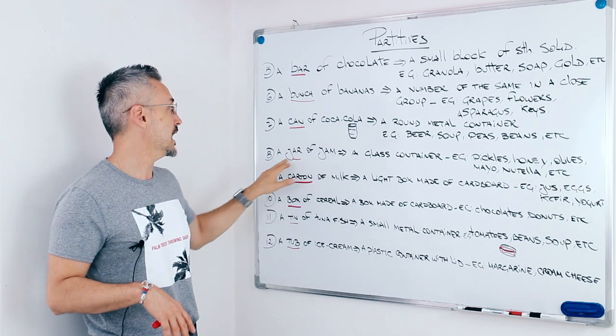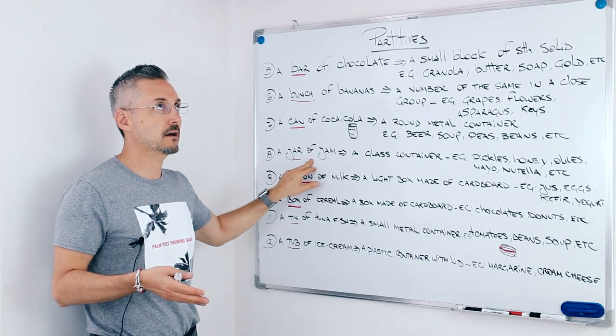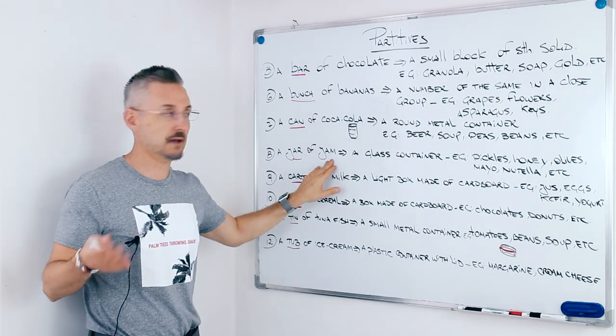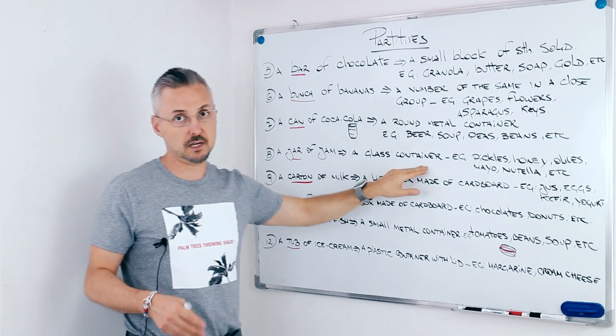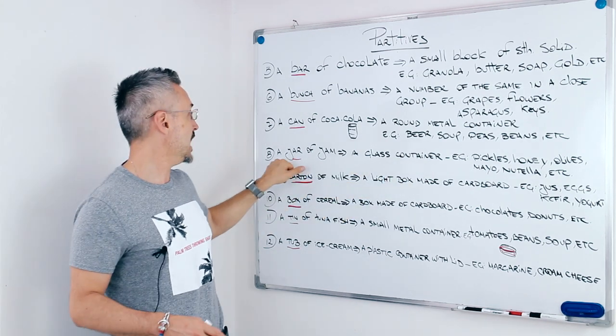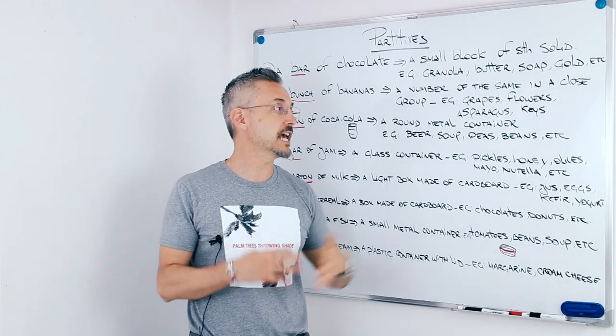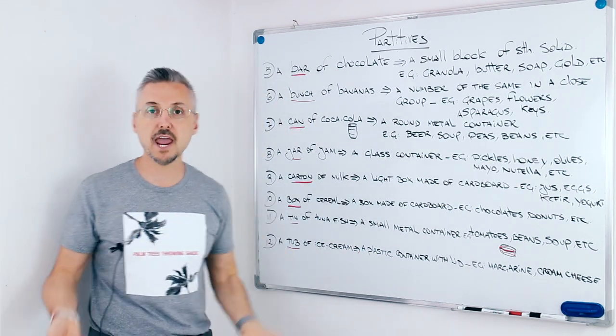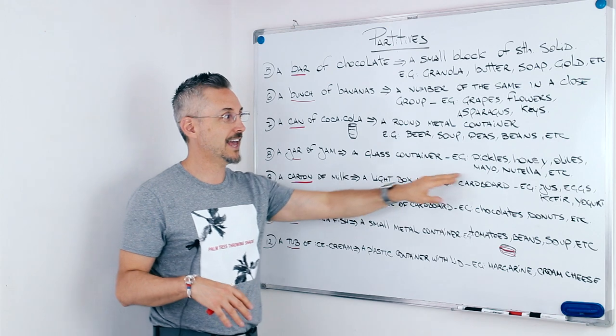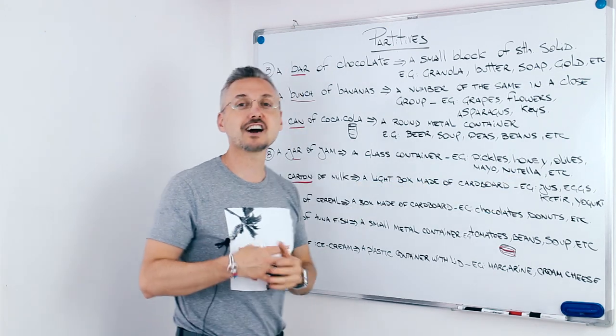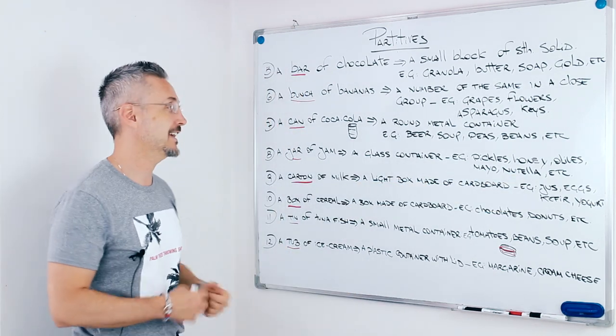So, a jar of jam. A jar of strawberry jam, for example. It's a glass container. And we say also a jar of pickles, a jar of honey, a jar of olives, of mayo, a lot of things. A jar of Nutella, a jar of peanut butter, etc.